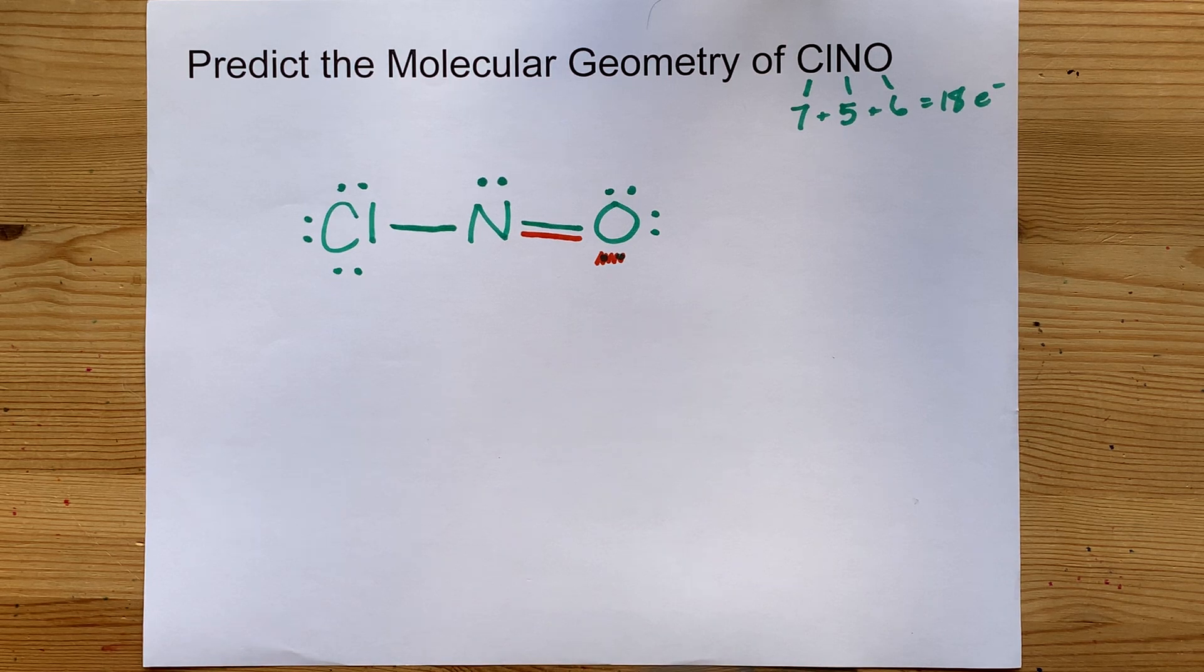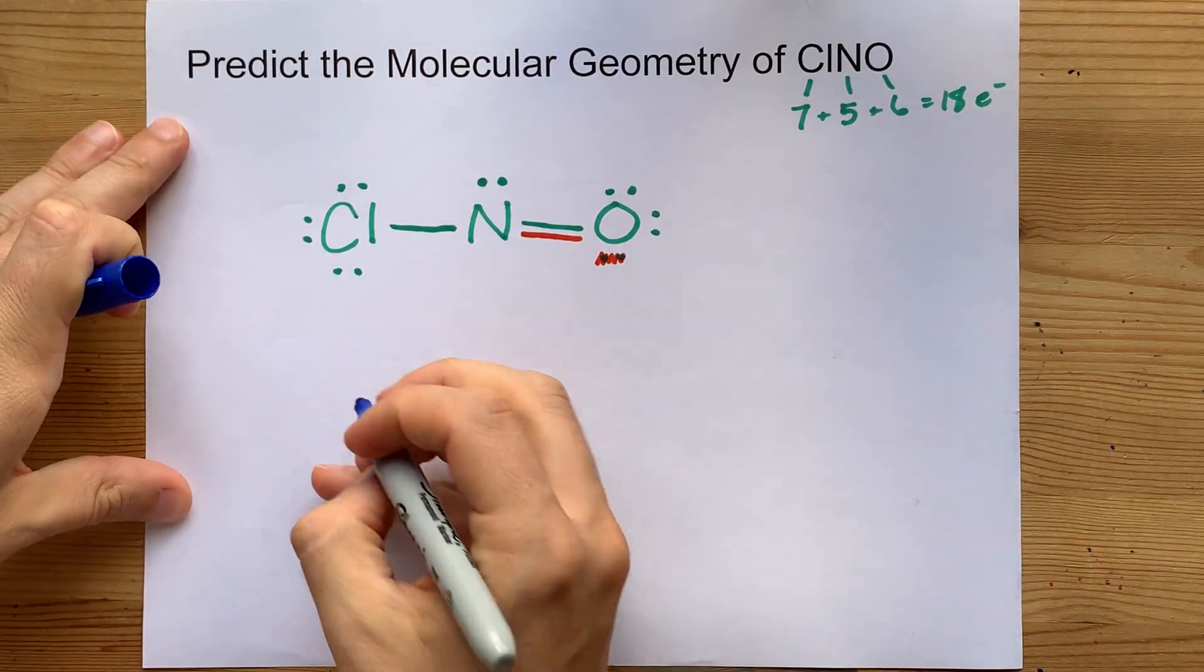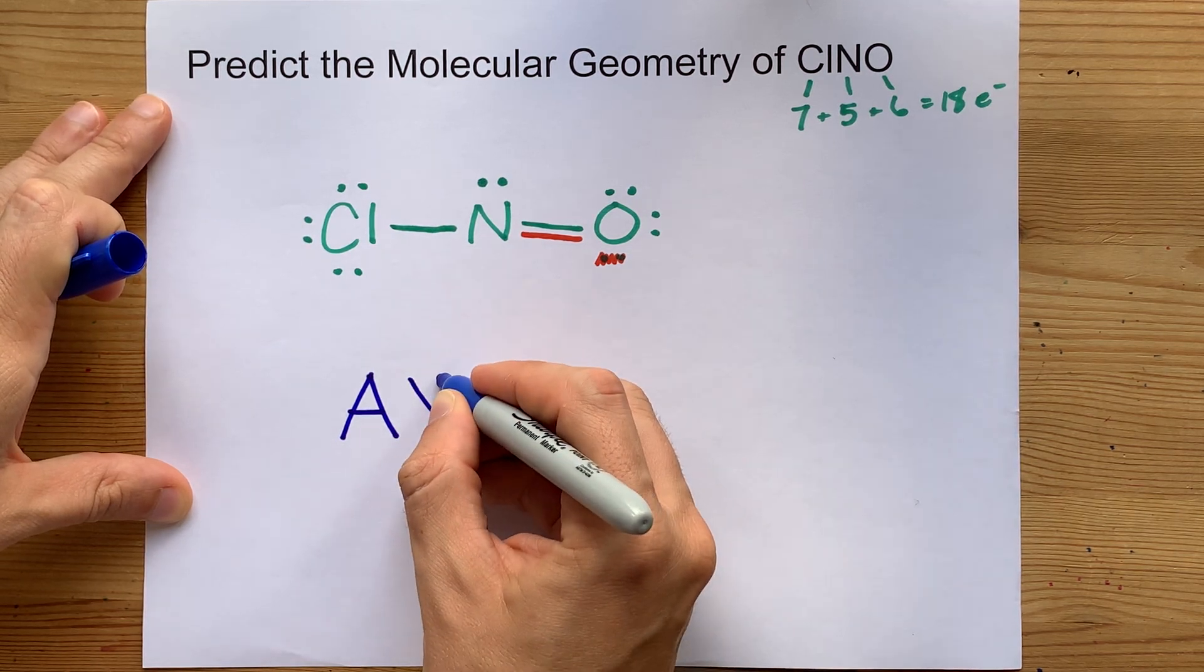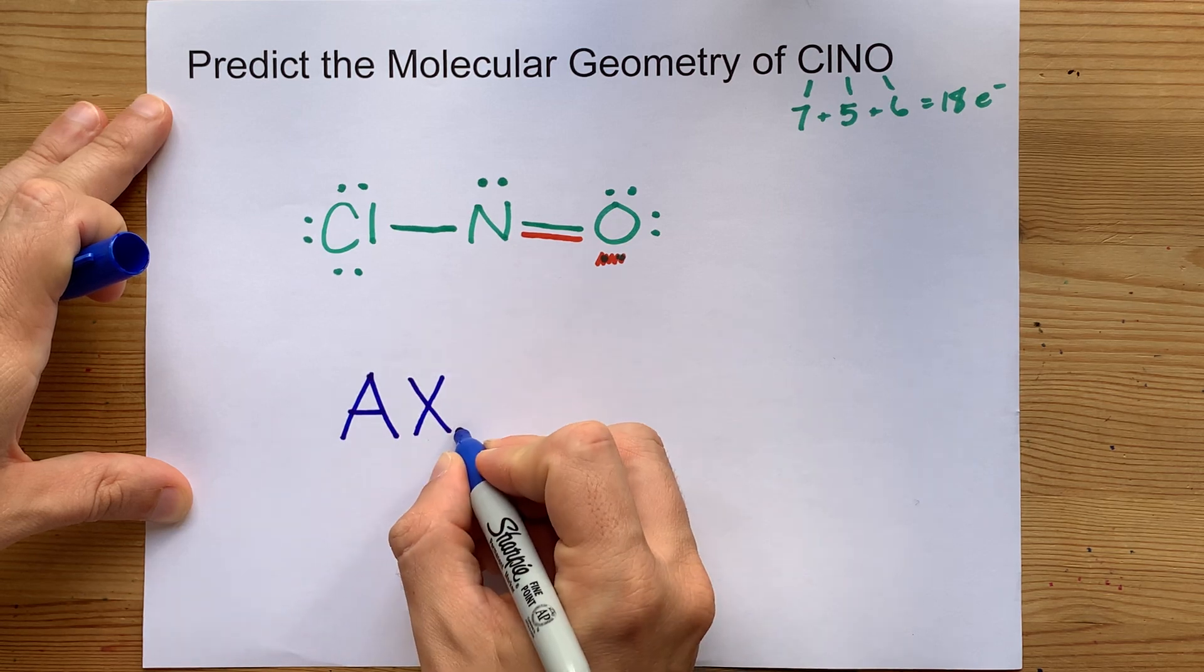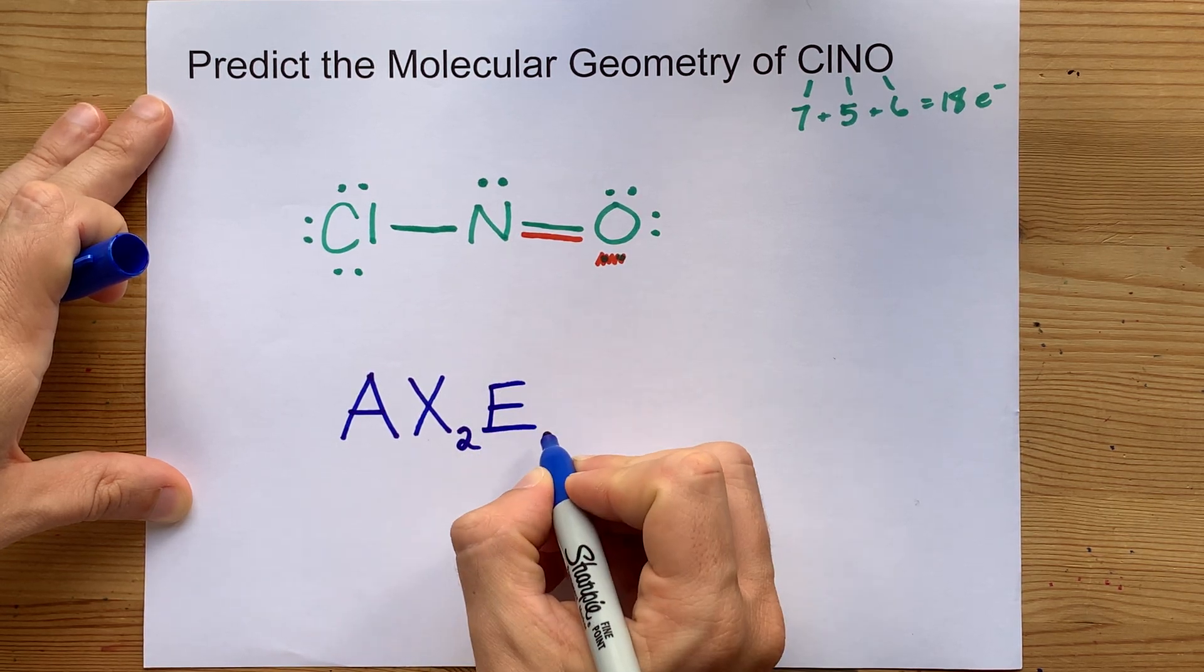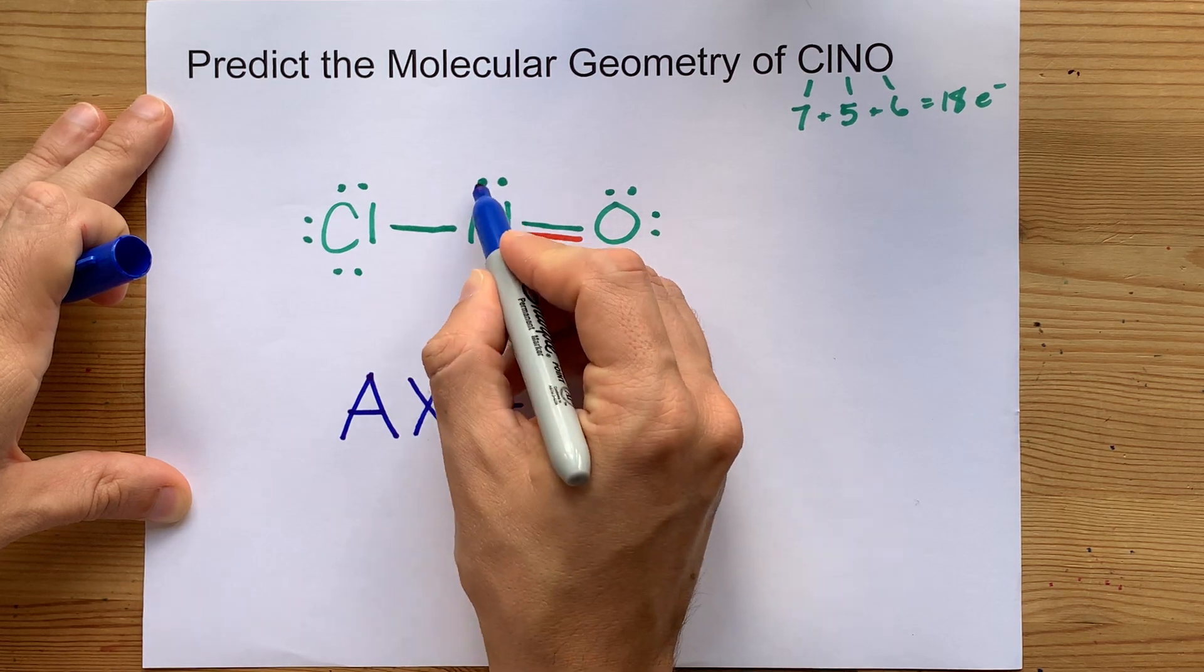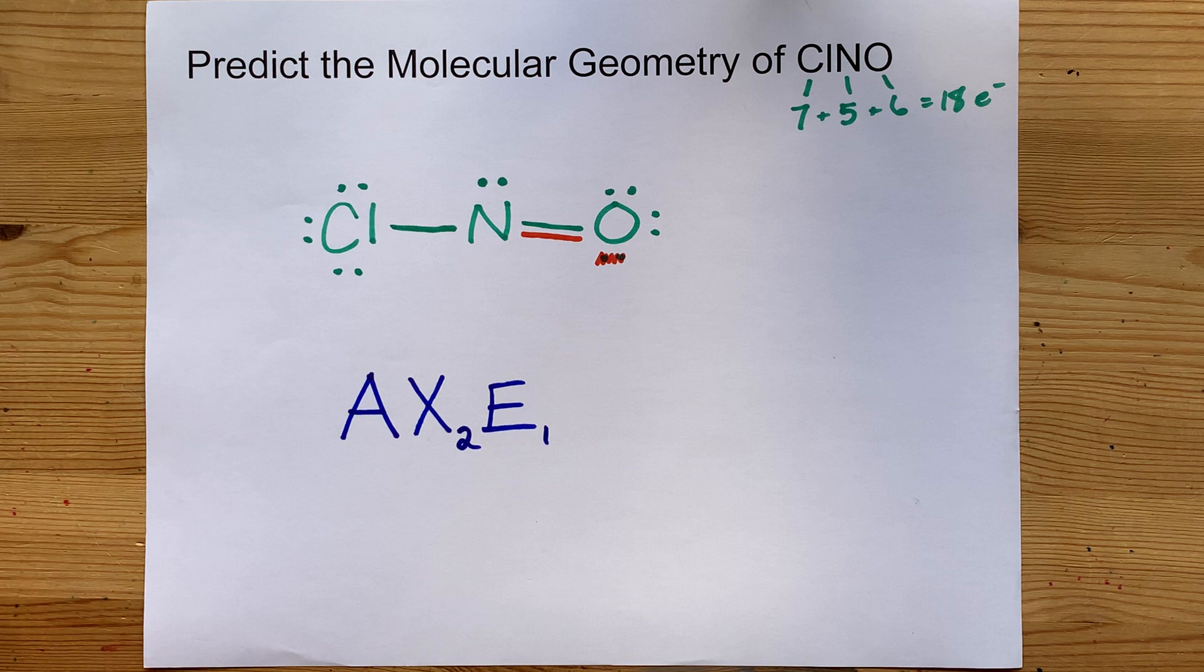Cool. Well, there we are. This is the complete Lewis structure. The molecular geometry comes from VSEPR. The center atom is always given an A, and then the number of atoms it's bonded to is the subscript on X. It's AX2 because there's two atoms the nitrogen's connected to. And the subscript on your E is for the number of lone pairs on the center atom. So here we only have that one pair there. It's AX2E1.